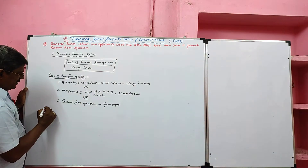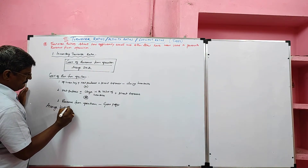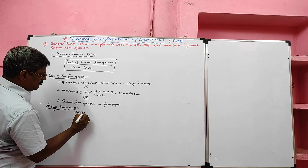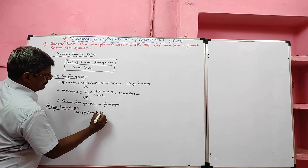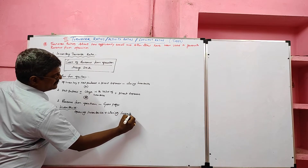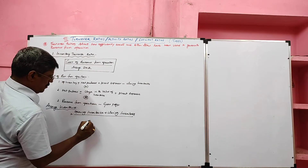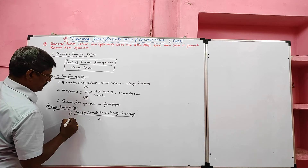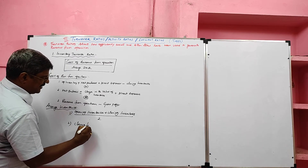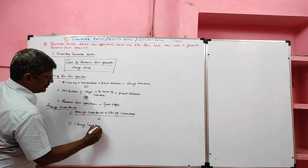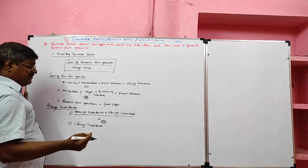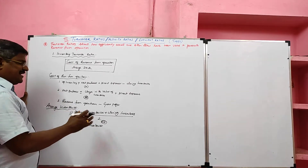Next we have to learn average inventory. If two inventories — namely opening inventory and closing inventory — are given, we use: opening inventory plus closing inventory divided by two. If only one inventory is given, we should assume it as closing inventory and can use it directly as average inventory.